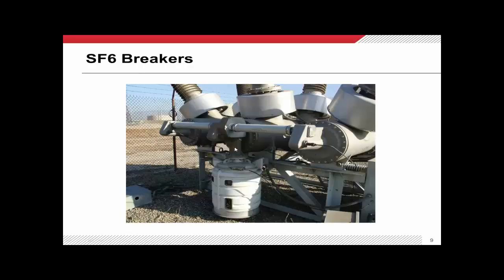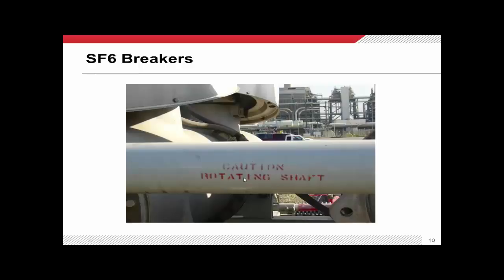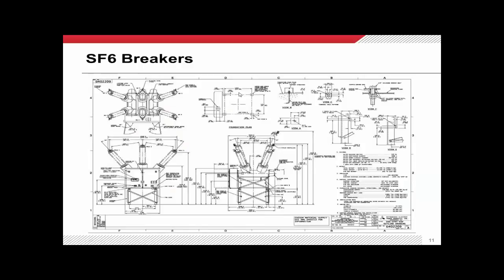That means the overall circuit breaker can operate in roughly two cycles, which is about the time frame we need it to operate. The spring releases its energy and you can see there's writing on this bar that says 'Caution: shaft rotating.' That's how it actually makes the three poles operate.